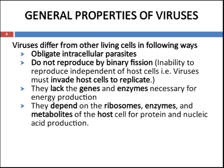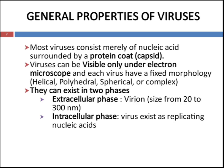Viruses must invade a host cell for their replication. They lack the genes and enzymes necessary for energy production. For reproduction, viruses depend on the ribosomes, enzymes, and metabolites of the host cell for protein and nucleic acid production. These are the main differences of viruses from other microorganisms. Most viruses consist merely of nucleic acid surrounded by a protein coat known as capsid.